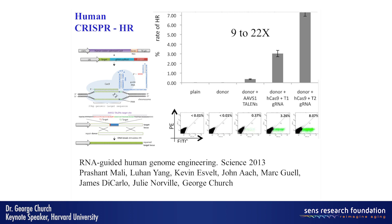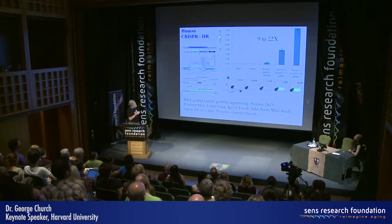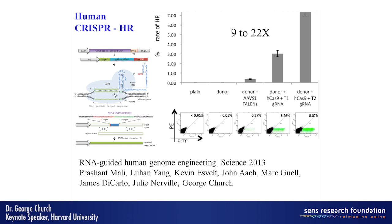Compared to TALENs, CRISPR gives a 9 to 22-fold enhancement of rate depending on the site, and the ease is hard to overstate — you just have to make 20 base pairs of sequence, a short oligo, and insert that into a standard vector. These vectors are freely available through Addgene, and thousands of people have accessed them that way. This was done by a FACS assay, but we've done a lot of endogenous genes since then as well.